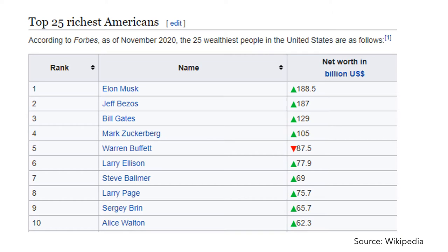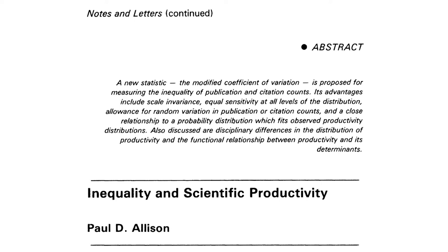The number of papers scientists write follows a power law distribution as well. There is enormous inequality in scientific productivity. Only about 6% of scientists produce half of all papers published. The distribution of scientific publications shows more inequality than the distribution of personal income.